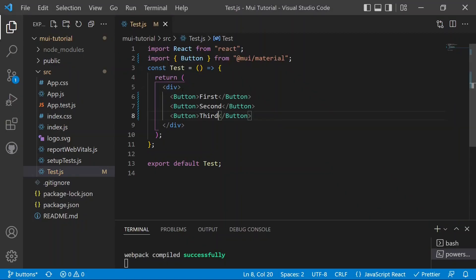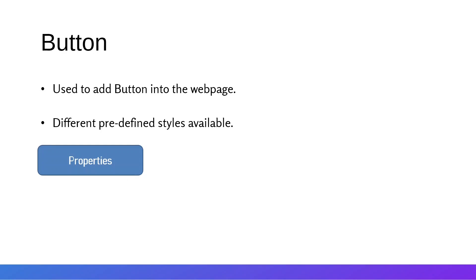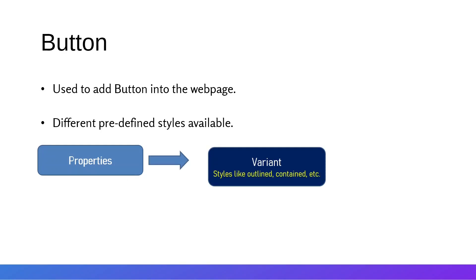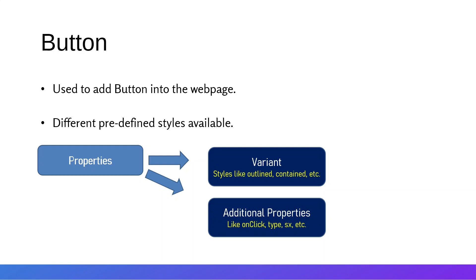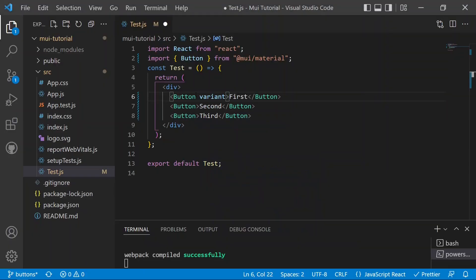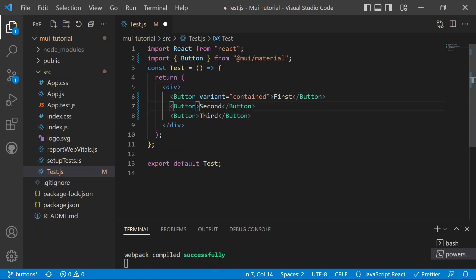We can now add a variant property to each button. The most important properties of a Button are: variant (outlined, contained, or text), event handlers like onClick, and type — which can be 'button', a link, or 'submit' for use with forms. There is also the sx prop for defining custom CSS styles.